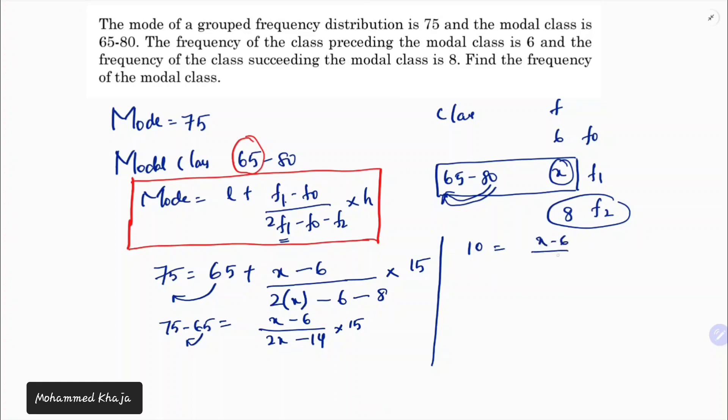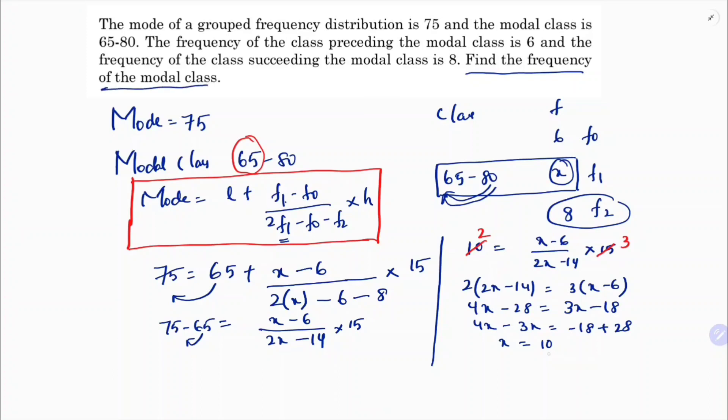Now 2 times 5, 5 times 3. I'll cross multiply: 2 into (2x minus 14) and 3 into (x minus 6). 2 times 2x is 4x, 2 times 14 is 28. 3 times x is 3x, 3 times 6 is 18. So 4x minus 3x minus 18 plus 28. Therefore x equals 28 minus 18, which is 10. So the frequency of the modal class is 10.